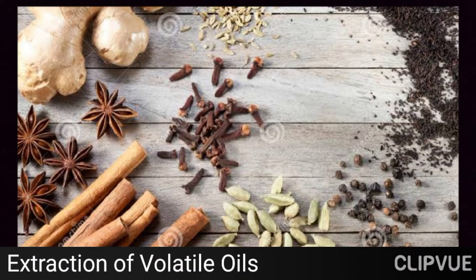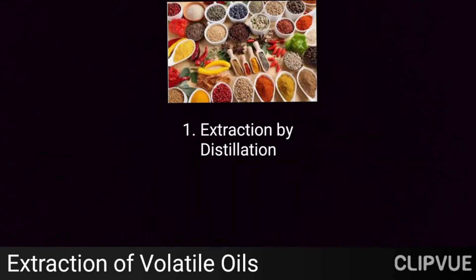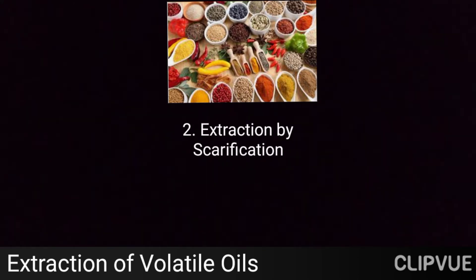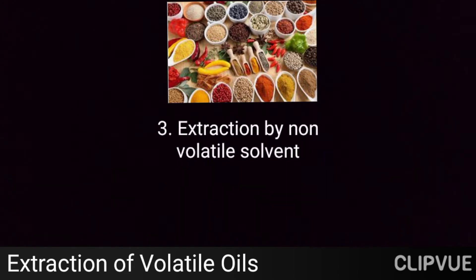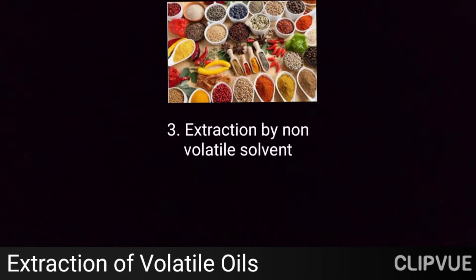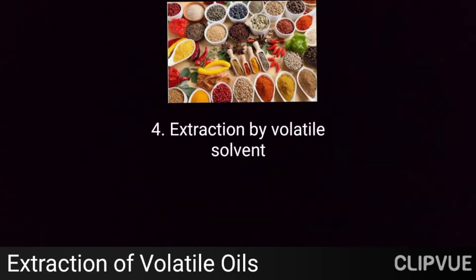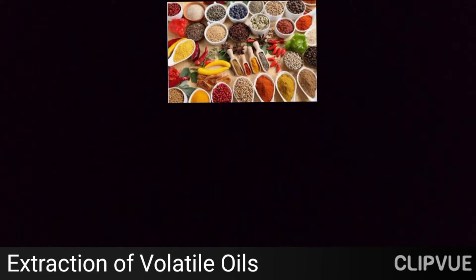Hello students, today we are going to discuss the extraction of volatile oils. There are certain methods for extraction of volatile oil: the first one is extraction by distillation, second is extraction by scarification, third is extraction by non-volatile solvent, and the fourth is extraction by volatile solvent. Let us discuss one by one.